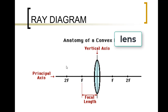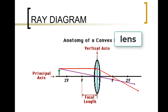For ray diagramming, the first ray is drawn parallel to the principal axis and then passes through the focus on the other side. The second ray comes from one end of the object passing through the midpoint in a straight line. The intersection of these two rays is where the image is located. If the object is beyond 2F, the image is inverted, smaller than the object, a real image, and located between F and 2F.